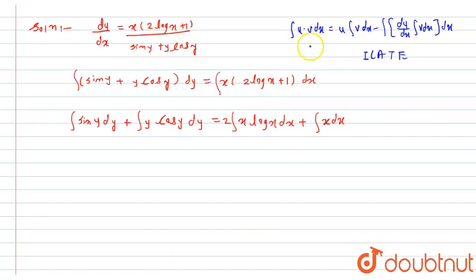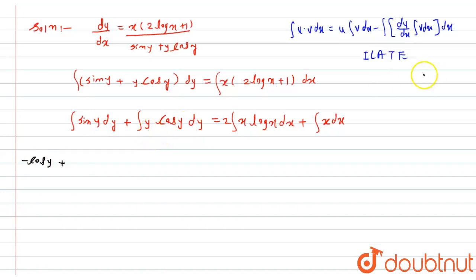According to the u·v formula and ILATE rule, I am going to apply integration by parts. Differentiating y·cos(y): the first function is y (arithmetic before trigonometric), so integration of sin(y) is minus cos(y), plus y times integration of cos(y) which is sin(y).